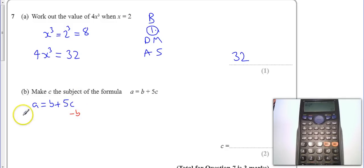And then that's going to give me here, it's going to give me A minus B. B take away B is nothing, leaves me with 5C.